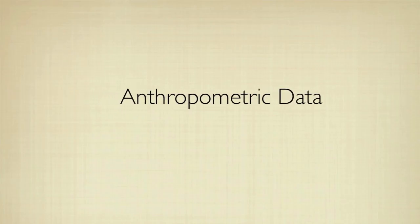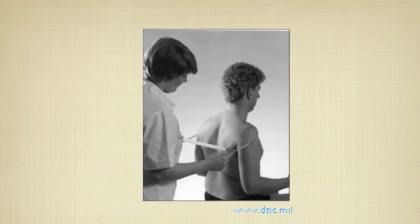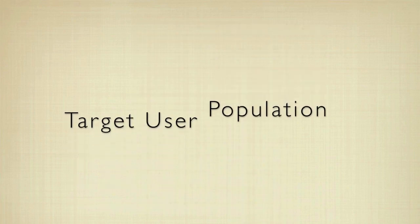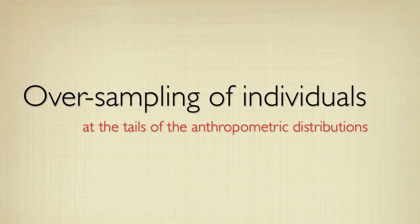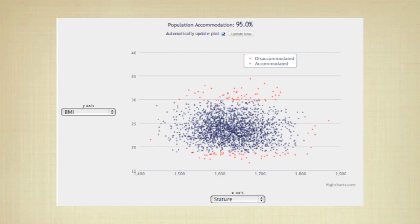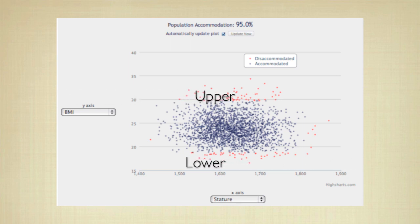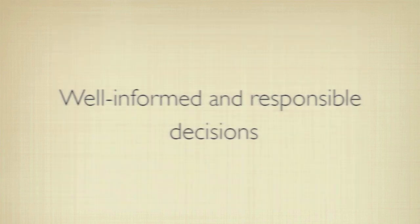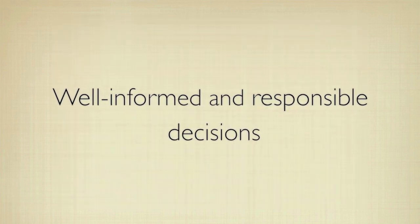Anthropometric data for user populations can be obtained in a number of ways. Surveys can be conducted to measure the body dimensions of a sample group of individuals who are selected to represent a target user population. An important aspect of these surveys is the oversampling of individuals at the tails of the anthropometric distributions. Design decisions are usually aimed at accommodating the central percentiles of users, resulting in disaccommodation of users at the upper and lower tails. Information about these parts of the distributions is therefore vital to making well-informed and responsible decisions.